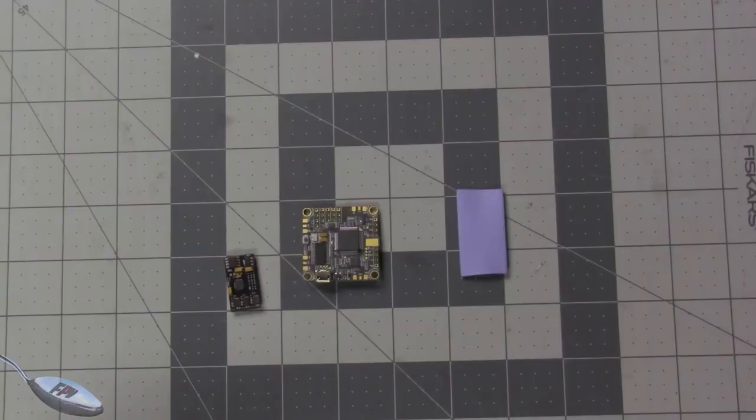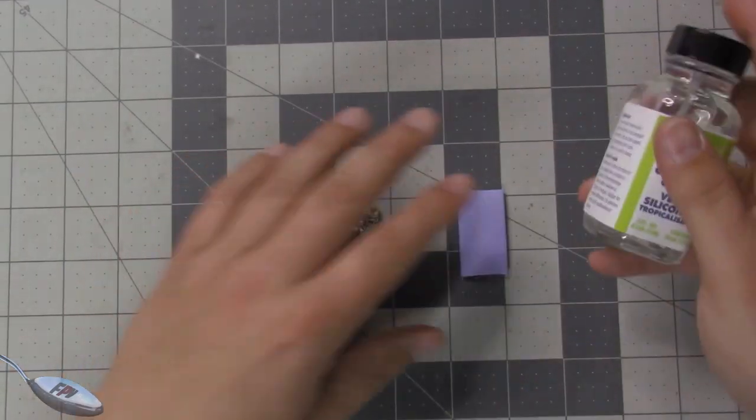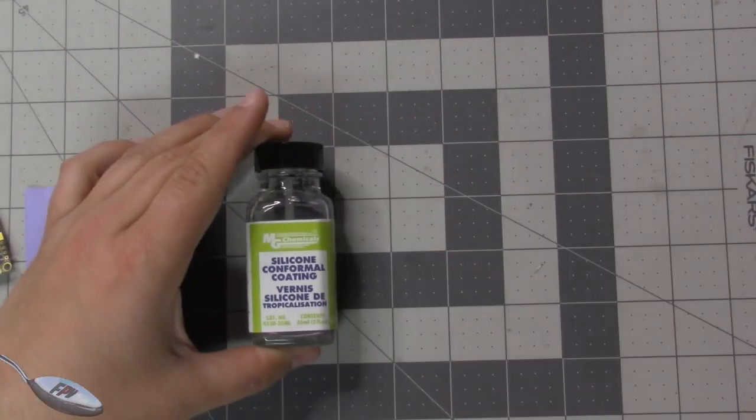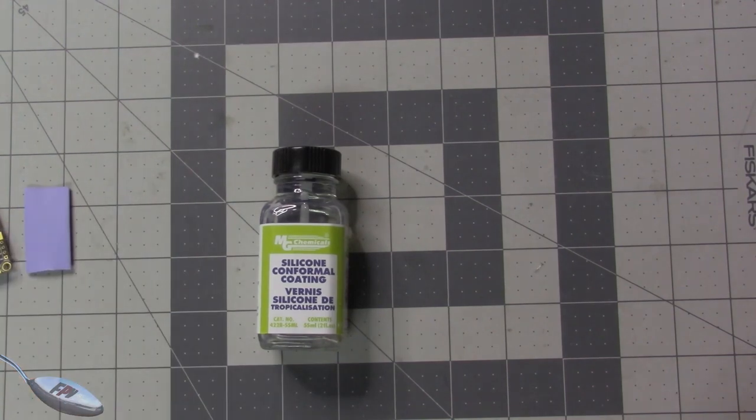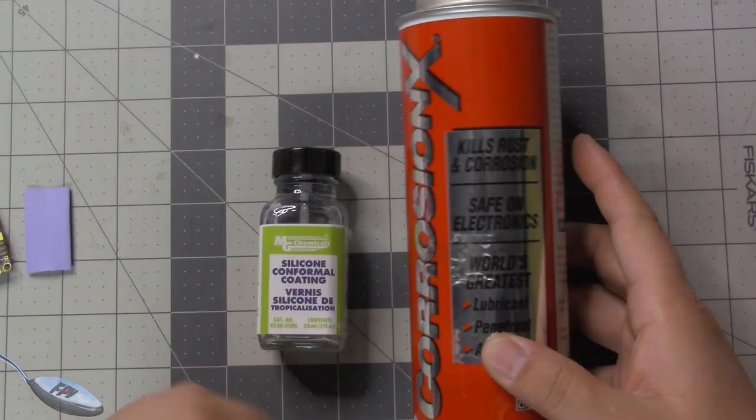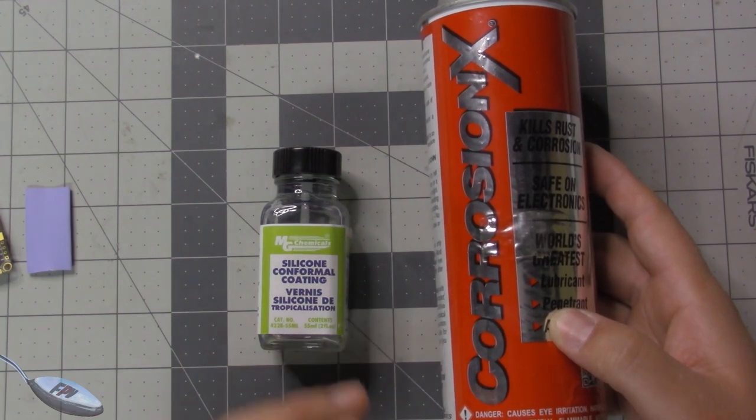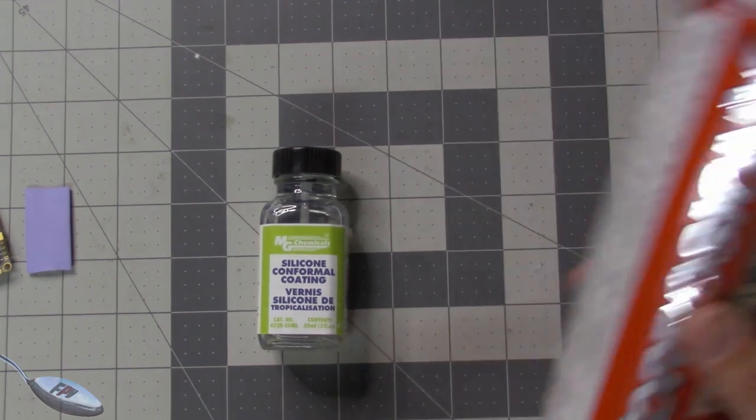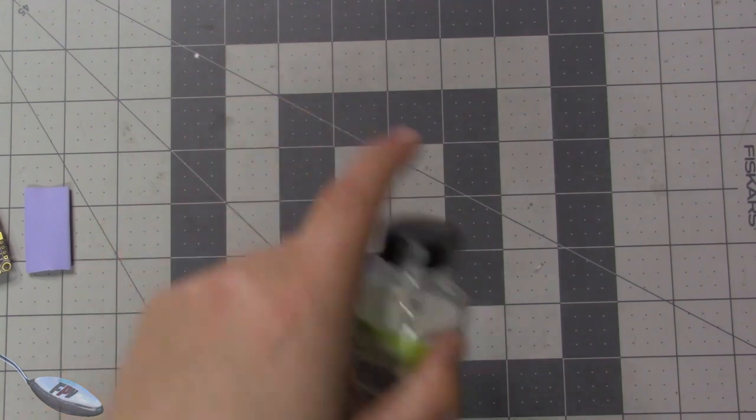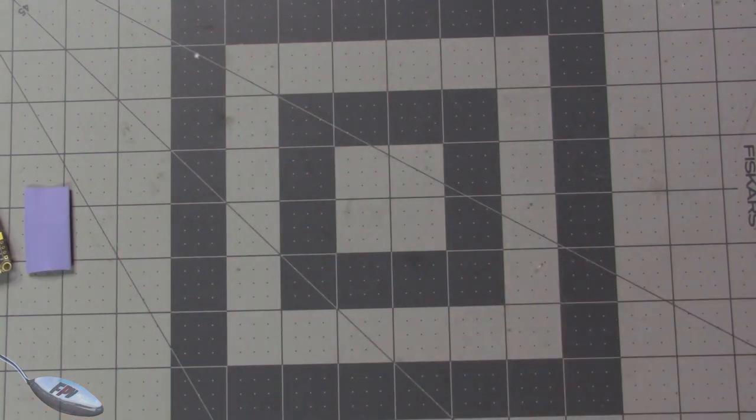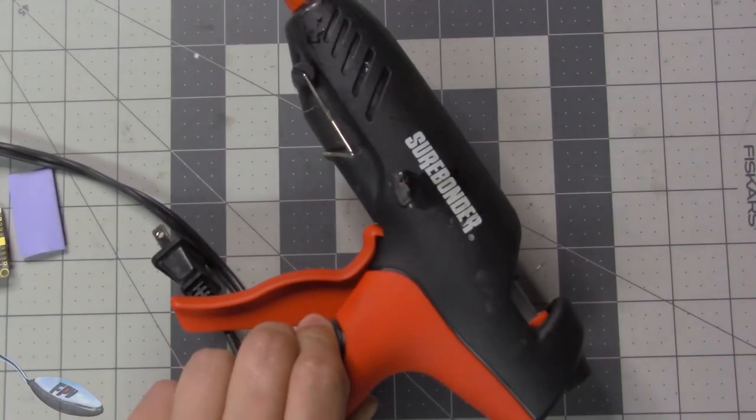Okay so we're gonna talk about extreme waterproofing and a few of the products that you've probably seen before have been this conformal silicon conformal coating and this stuff, the Corrosion X. I'll link everything that I'm using in the description. Basically I use both of these and a hot glue gun or silicon glue actually.